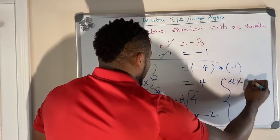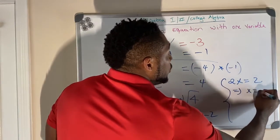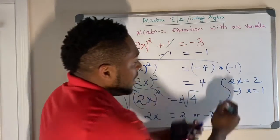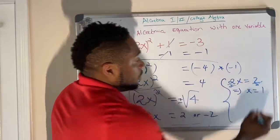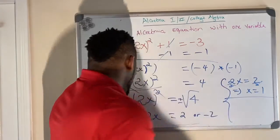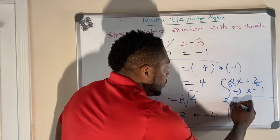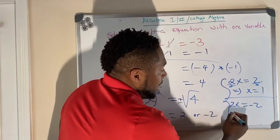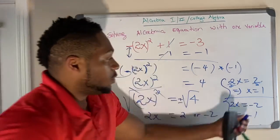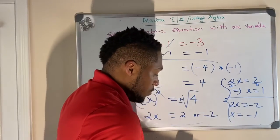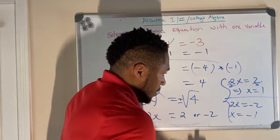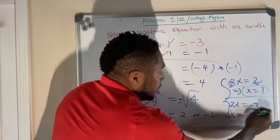So 2x is equal to 2. That implies that x is equal to 1. So what you do is divide this by 2, divide this by 2, that implies x is equal to 1. And 2x is equal to negative 2. That implies that x is equal to negative 1. So the solutions are x = 1 and x = -1.